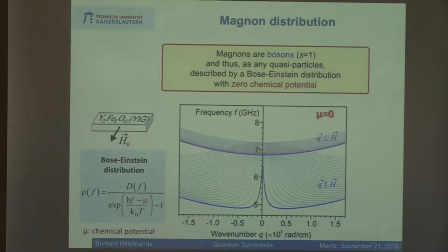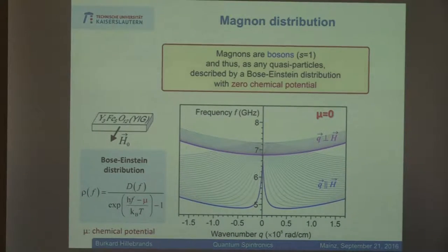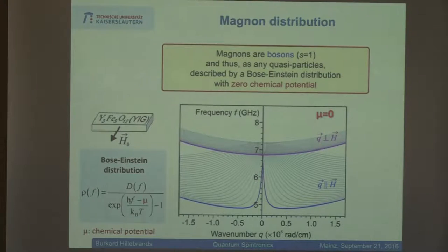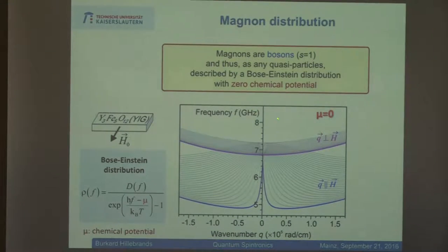So what will happen? This is an open system, therefore the chemical potential is zero. This means that if you look into the Bose-Einstein distribution function at gigahertz frequency scale compared to the terahertz scales of room temperature energies, all these states are equally populated. What we would like to see is Bose-Einstein condensation: collecting all the magnons at the lowest point in energy, which is actually at finite wave vectors, not at zero wave vector.